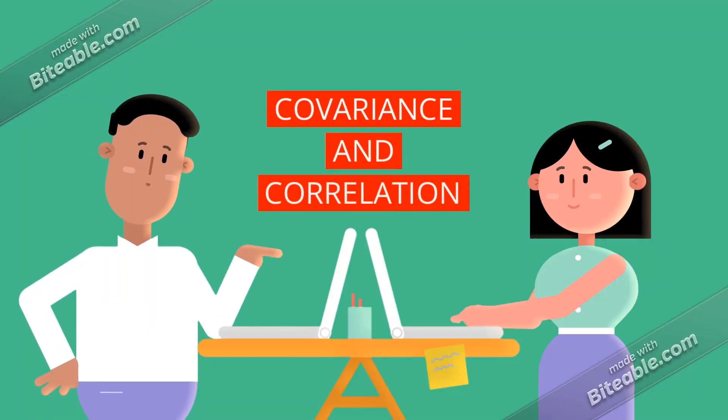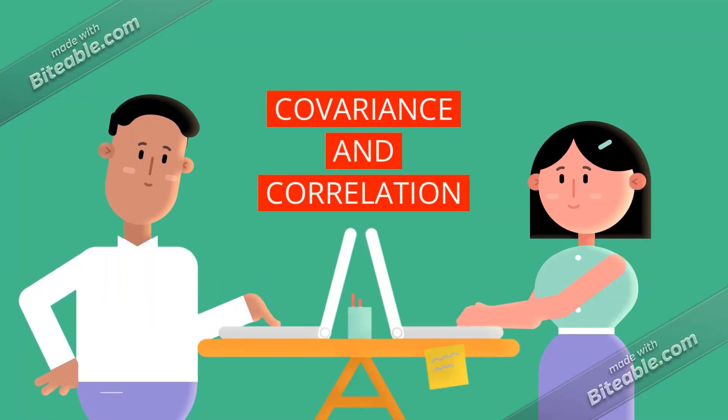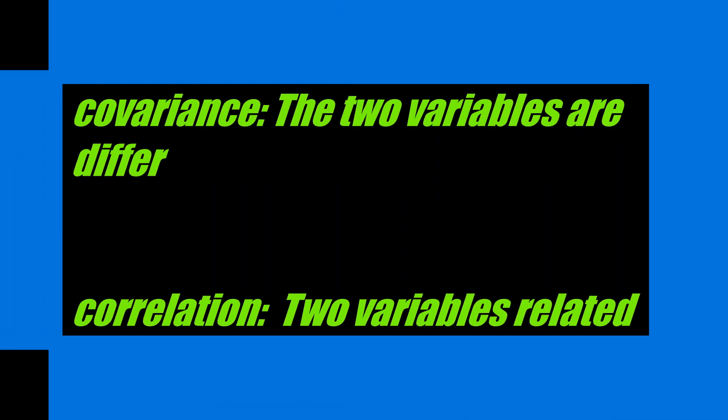So let's have a look at correlation and covariance. Covariance and correlation are two terms that are opposed and are both used in statistics and regression analysis.